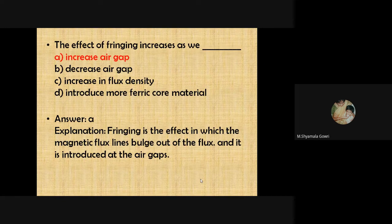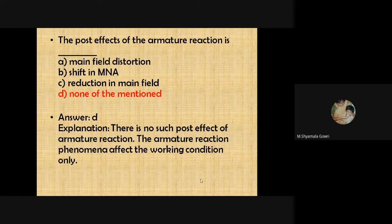The effect of fringing increases as the air gap increases. Fringing is the effect where magnetic flux lines bulge outward at the air gaps, and it increases with an increase in air gap. Regarding the post-effect of armature reaction — there is no such post-effect. Armature reaction is a phenomenon that affects the working condition only, so the answer is none of the mentioned.